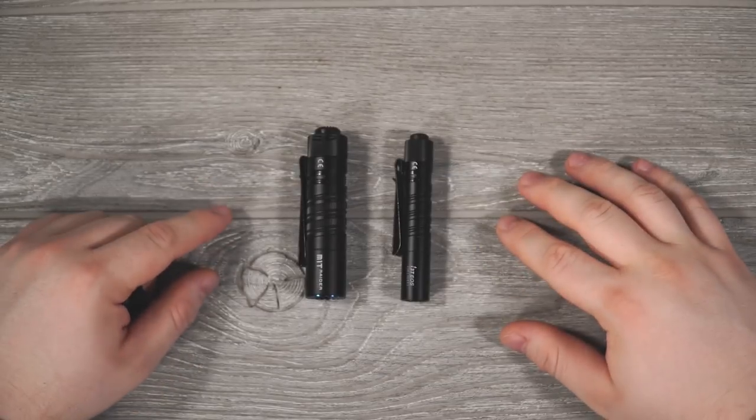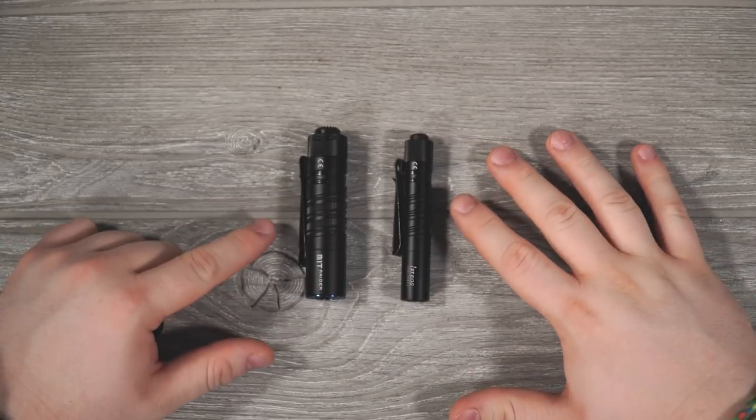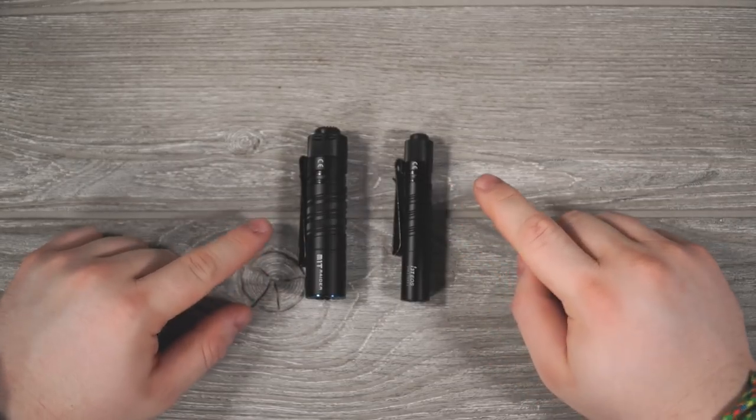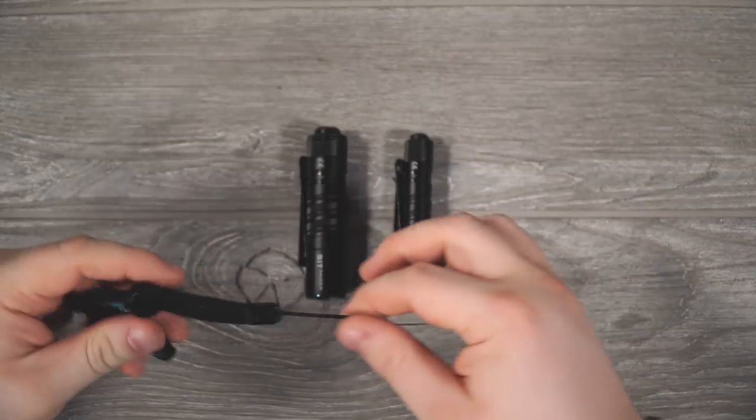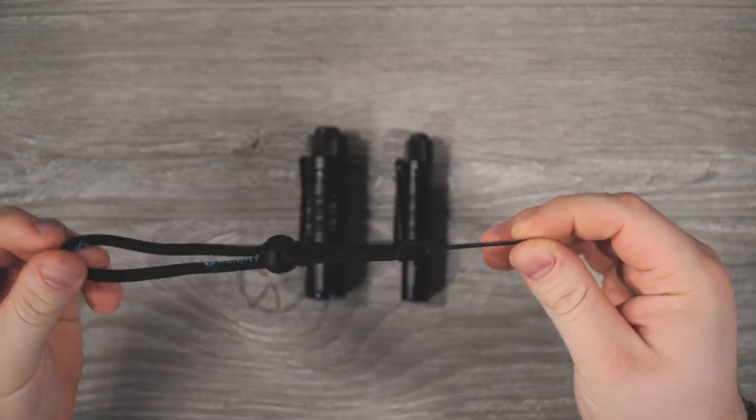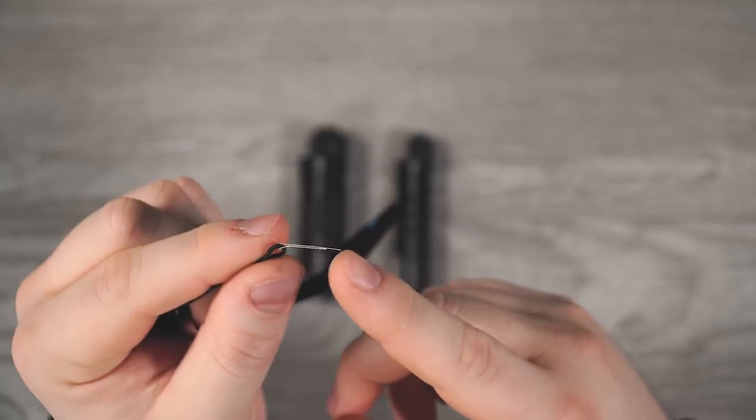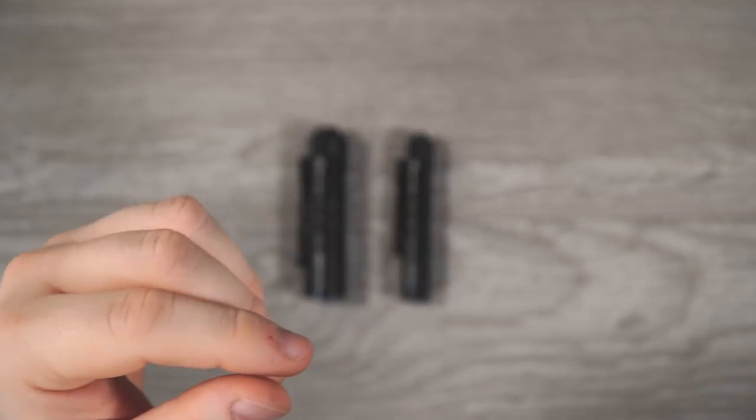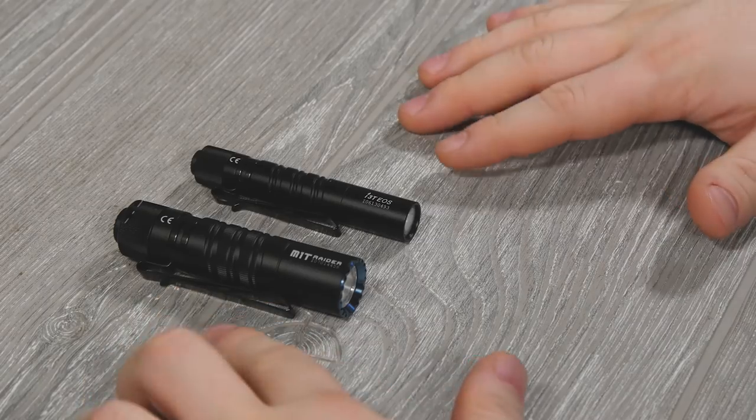In the box there are not going to be too many differences. They do come with the batteries installed. You have to remove a little protective film. They have the pocket clips pre-installed, and with the M1T Raider you're also going to get a standard Olight little strap with a little threader there to help you thread this through the tiny hole.